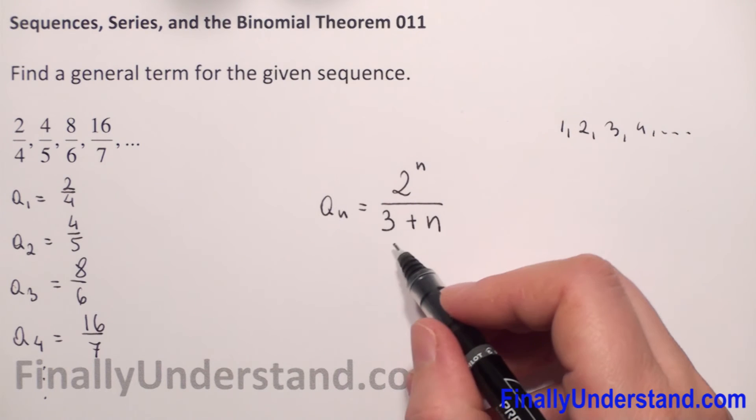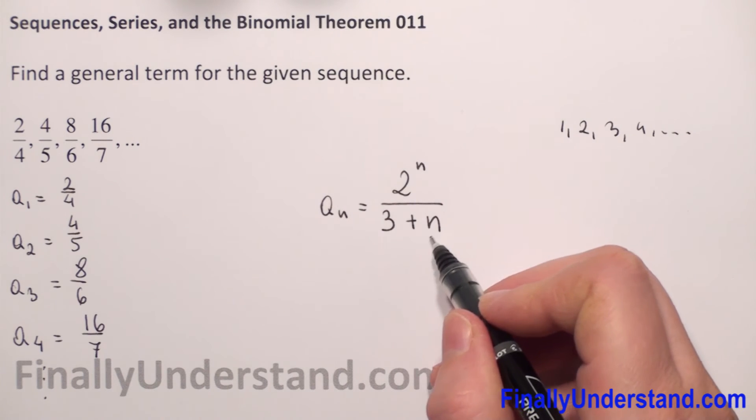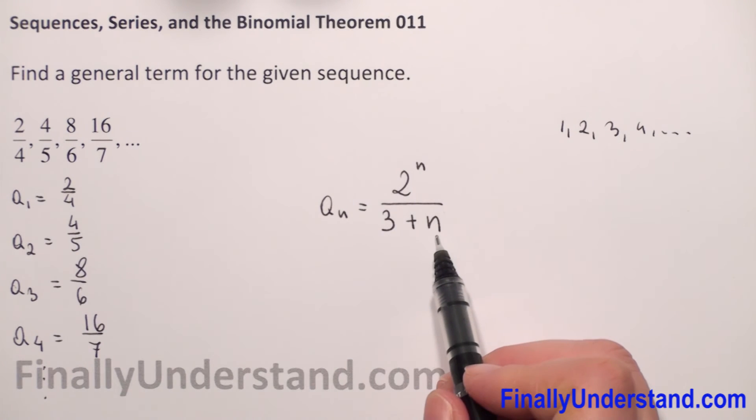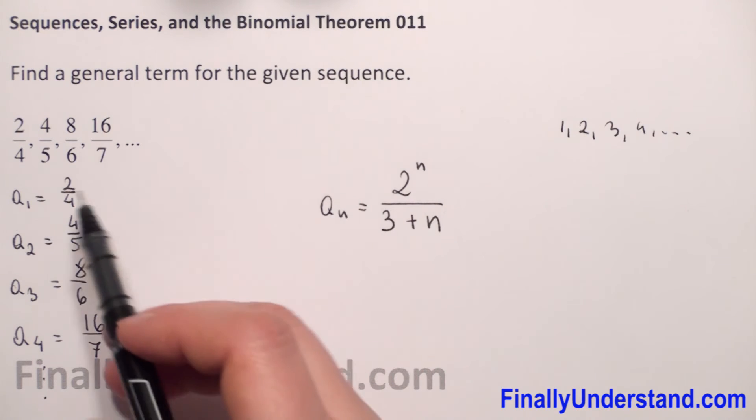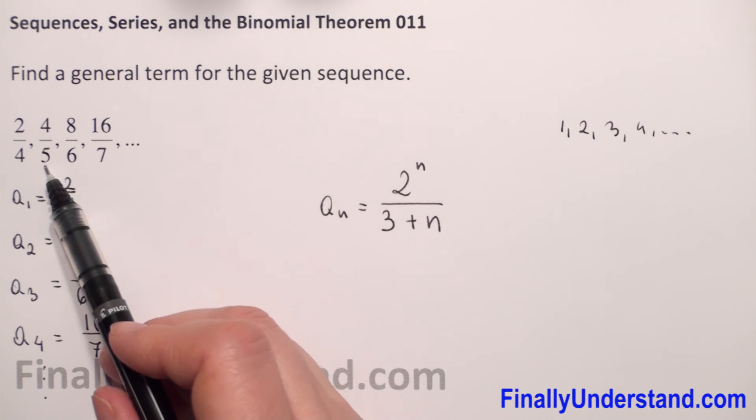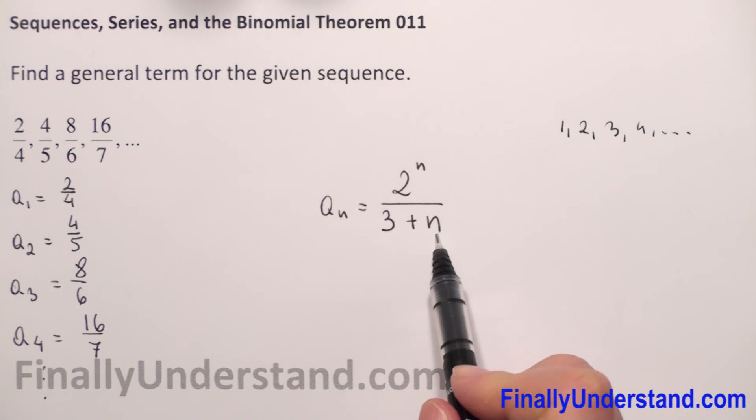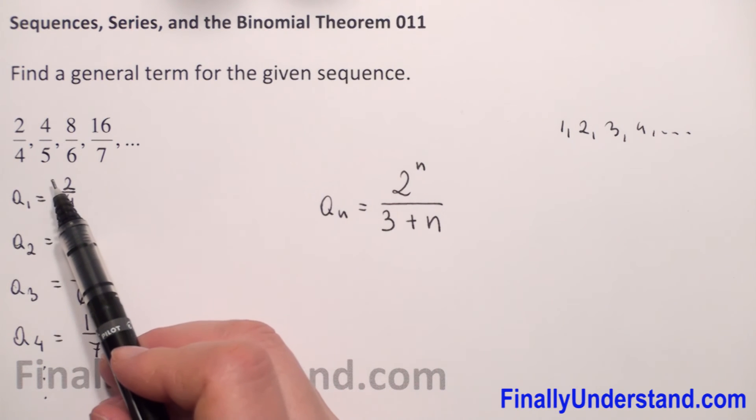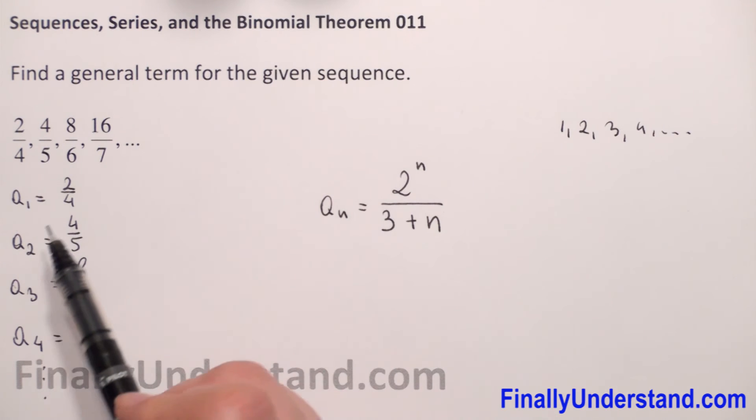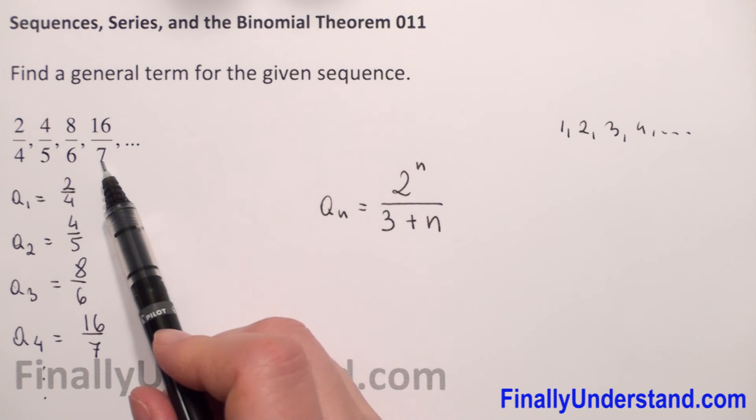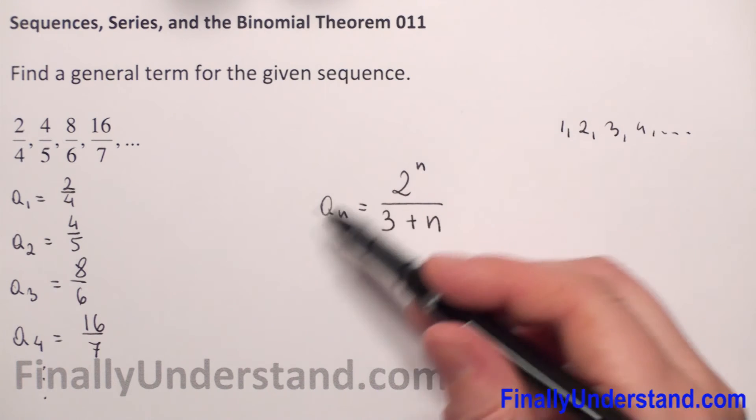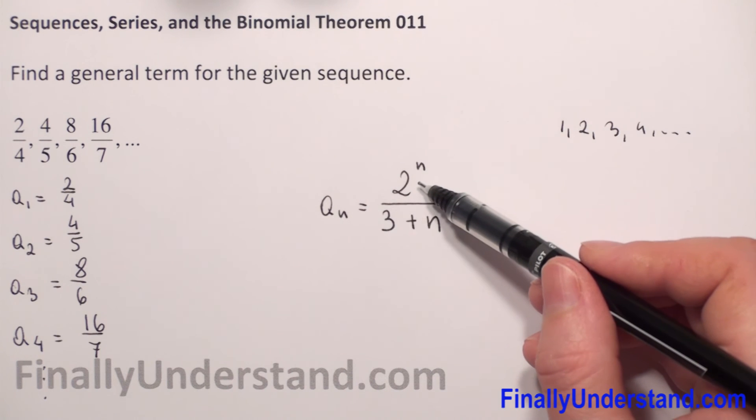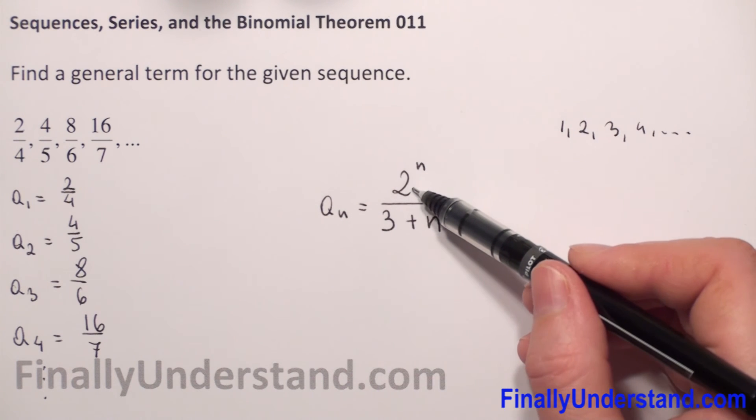When n equals 1, we will have 3 plus 1, which is 4. When n equals 2, we will have 3 plus 2, which is 5. For n equals 3, we will have 3 plus 3, which is 6. For n equals 4, we have 3 plus 4, which is 7. So we've got our pattern.